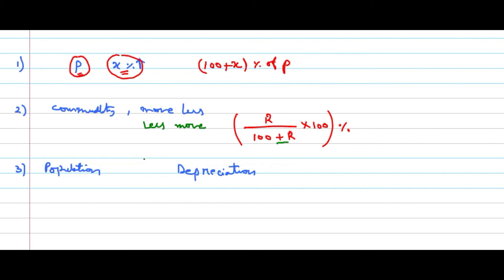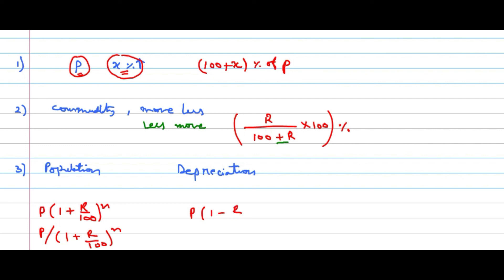Coming to population and depreciation: for population, the formula will be P into (1 + R/100) whole power N for population after N years, and P divided by (1 + R/100) whole power N for population N years ago. For depreciation, same type of formula but reduced: P into (1 − R/100) whole power N, and P divided by (1 − R/100) whole power N.